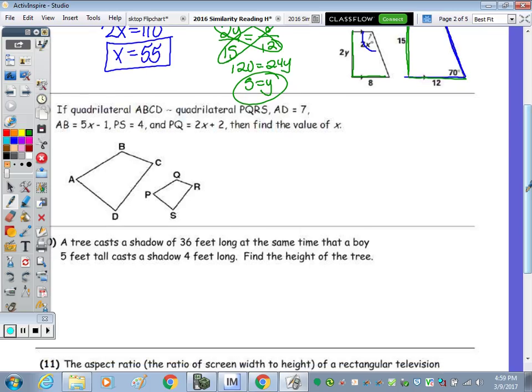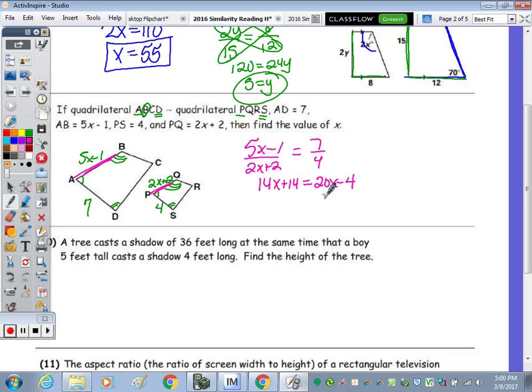Given the two quadrilaterals below that are similar, we have AD equals 7, AB is 5X minus 1, PS is 4, and PQ is 2X plus 2. Now corresponding angles are congruent, so A and P are congruent, D is congruent to S, and B is congruent to Q. So corresponding sides are proportional. So 5X minus 1 corresponds to 2X plus 2. I'm going to write the 5X minus 1 up top. Equals 7 to 4. I went left to right, left to right. Cross multiply. 7 times 2X plus 2 is 14X plus 14. 4 times 5X minus 1 is 20X minus 4. So I'm going to subtract 14X and get 6X. Add the 4 over 18. And we get X equal to 3.